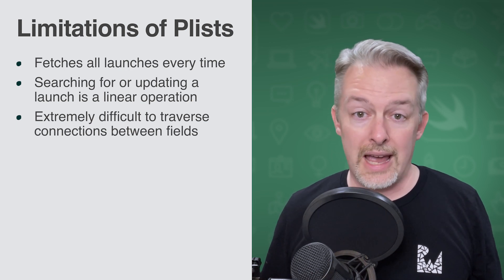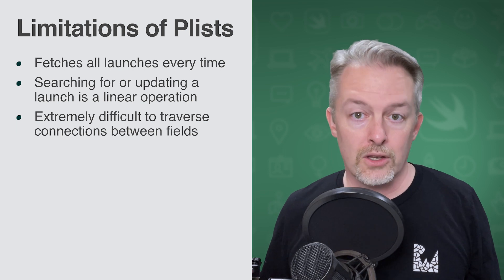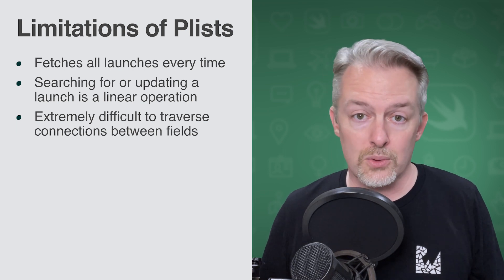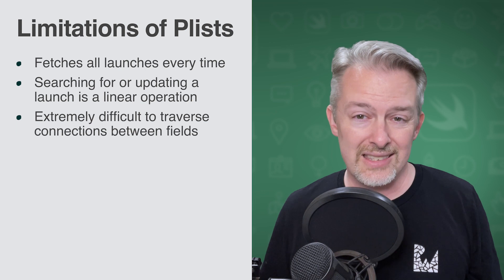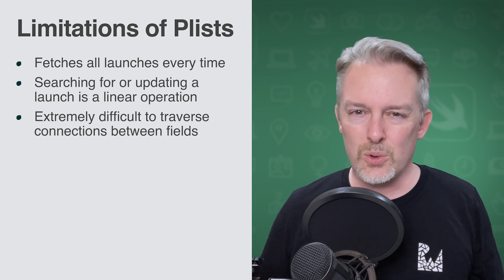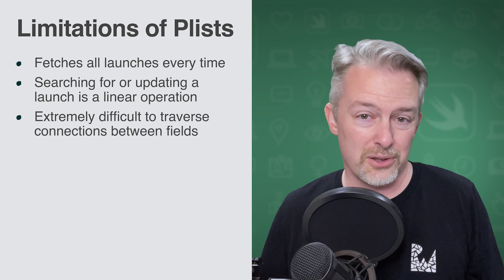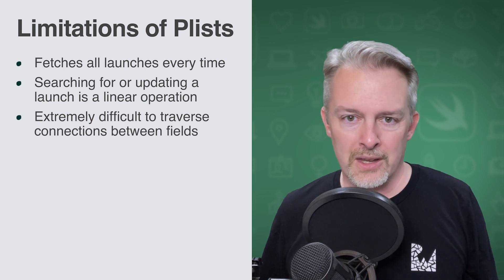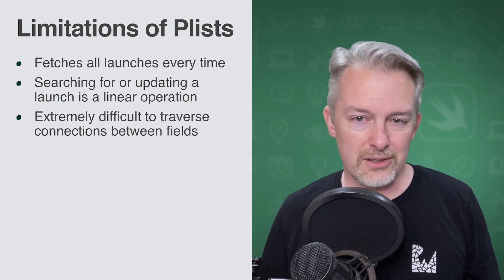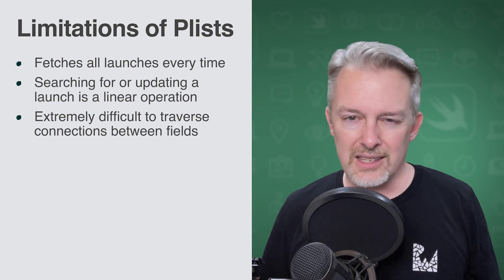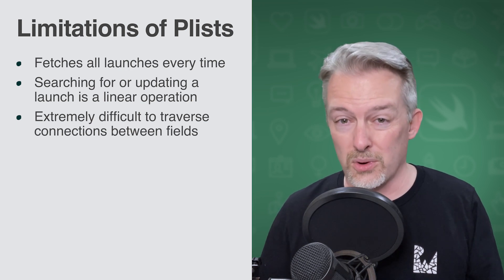Imagine that you want to add launches to specific lists. You could create a list type that stores a reference to each launch as an array of IDs, but how do you easily and quickly fetch launches that only belong to a particular list? At this point, you want to figure out how and where to store this data instead of focusing on your app's logic, which is far more important.